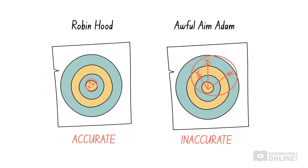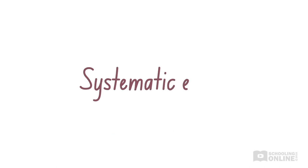So what makes our data become inaccurate? If we have performed our experiment correctly, then inaccuracies may be a result of systematic errors.